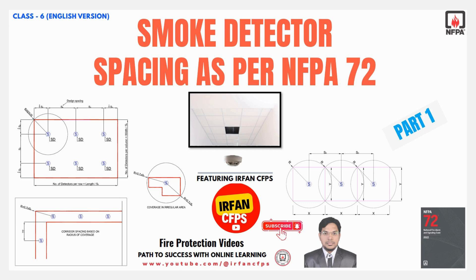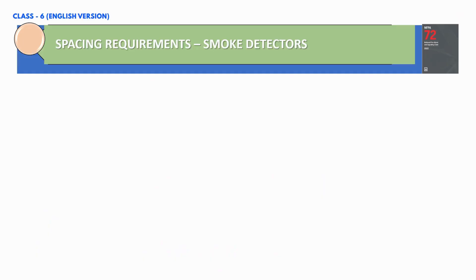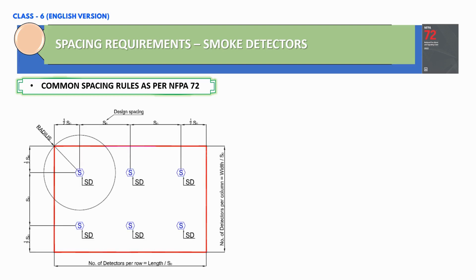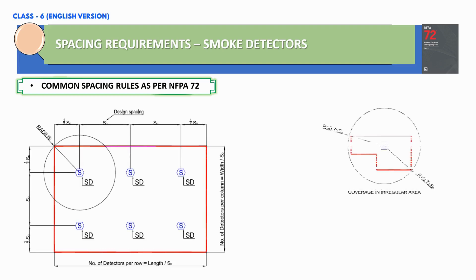So let's start our today's class. NFPA 72 provides some common spacing rules and they are designed to ensure optimal performance of smoke detectors, thereby minimizing the risk of damage and loss of life.